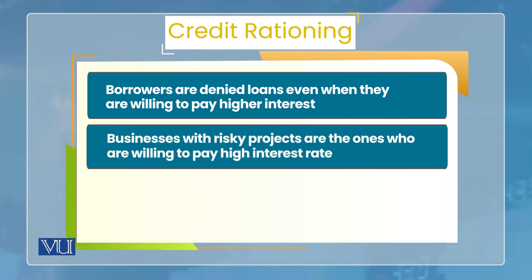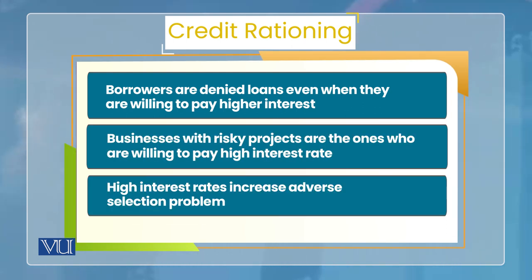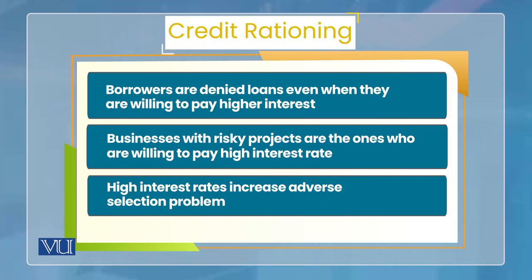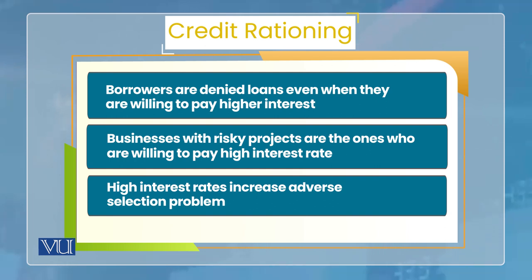Ek aur channel jo isi ke andar hai woh hai credit rationing ka. Credit rationing ka concept yeh hai ki agar jo borrowers hain, unke paas investment ki opportunities mojood hain, and that's why they are willing to pay higher interest. Lekin still problem yeh hai ki jo lenders hain, unke liye ek problem hoti hai: jo risky projects wali firms hoti hain, wohi aamuman higher interest rate bhi pay karne ko taiyar ho jati hain. Iska matlab yeh hai ki agar market mein interest rate high hai aur us high interest rate par bhi kuch borrowers loan lene ke liye taiyar hain, toh lenders ke zehan mein yeh hota hai ki shayad yeh bahut risky farms hain. Isliye higher interest rate par adverse selection ka problem aur zyada ho jata hai, aur us wajah se lenders lend nahin kar pate — aur credit rationing start ho jati hai.